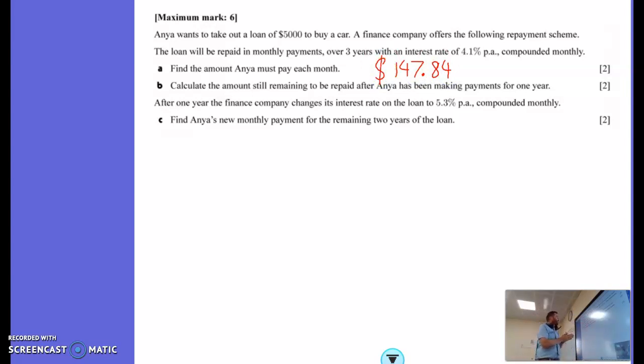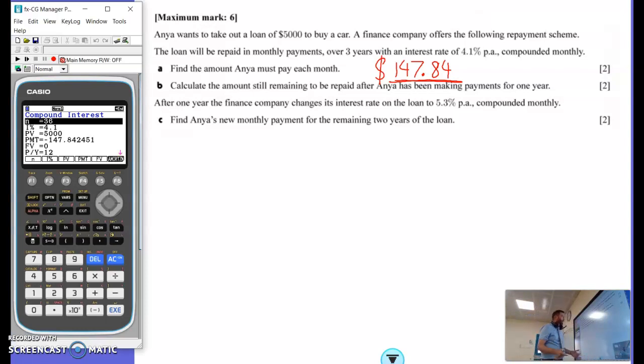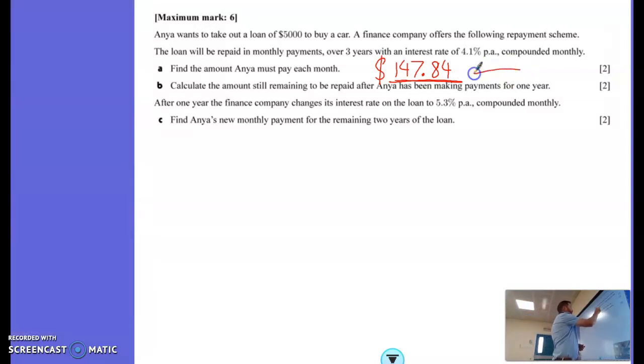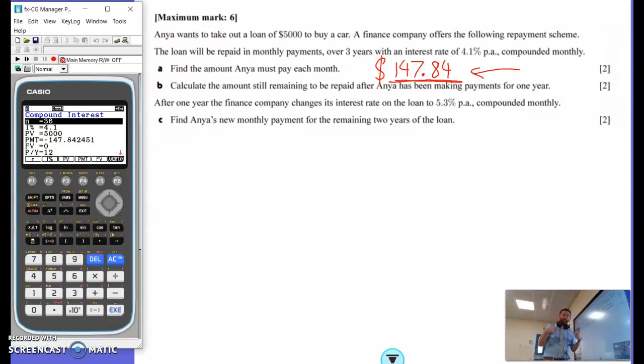Calculate the amount still remaining to be repaid after she's been making payments for one year. We're going to need to use the calculator again here. It might be tempting to just take the amount she's been repaying and multiply it by 12. But because interest is being added every month, as that amount changes, so does the amount of interest we're paying. We can't just do that simple calculation.